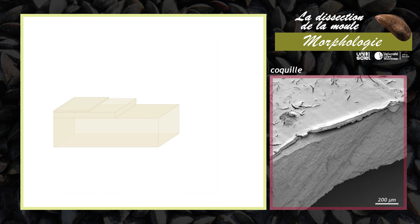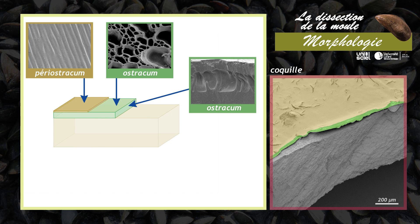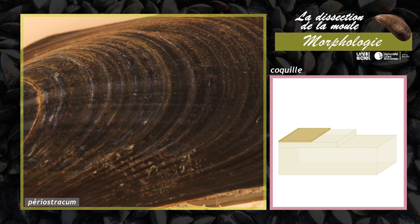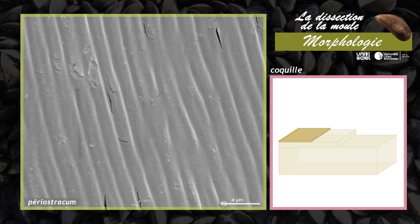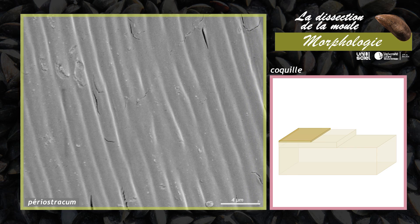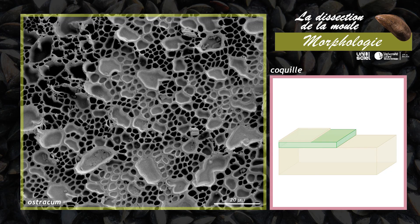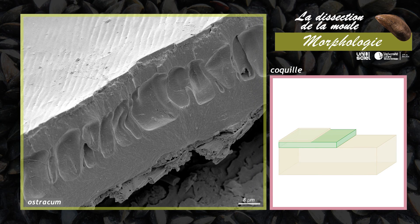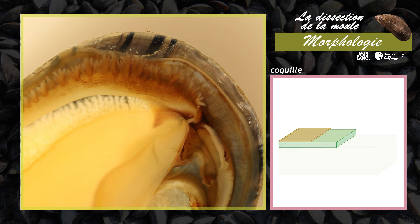La coquille est formée de trois couches : le périostrachome, l'ostrachome et l'hypostrachome. Le périostrachome est une mince couche brunâtre de nature protéique. Il recouvre l'ostrachome, une couche de prismes en carbonate de calcium. Ces deux parties de la coquille sont sécrétées par les bords du manteau.